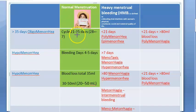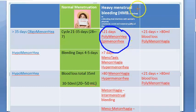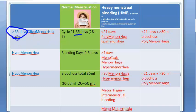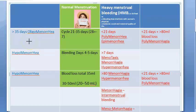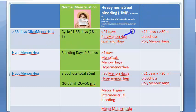If the cycle is less than 21 days, she is going to bleed more often — that is called polymenorrhea, also known as epimenorrhea. If the cycle is greater than 35 days, she is going to bleed less often — that is called oligomenorrhea, meaning the cycles are very long.